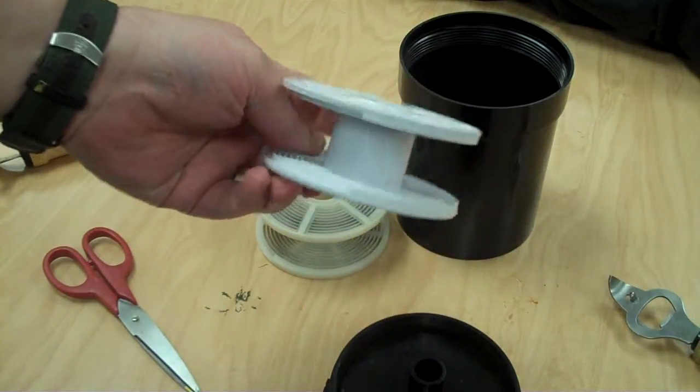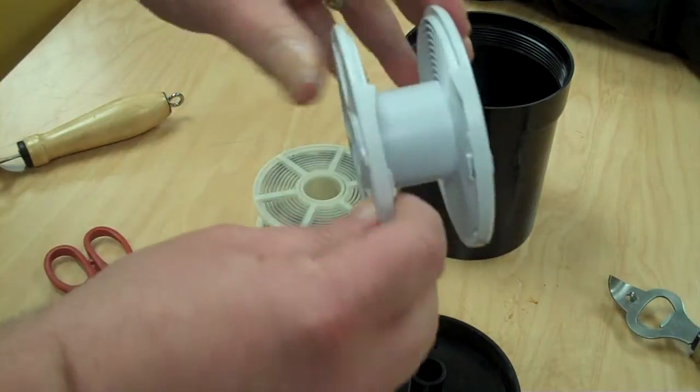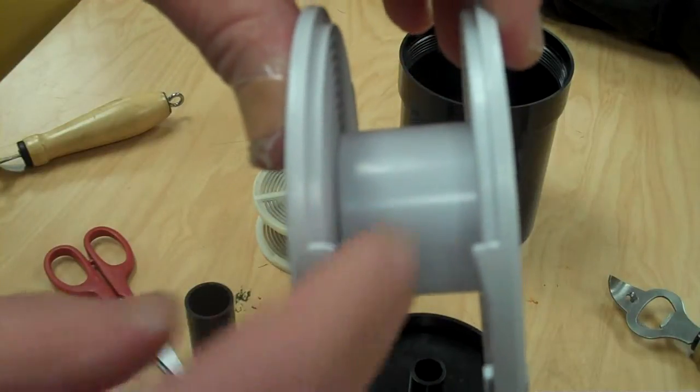This is a reel and there's two kinds. This one, and I'll hold it up to the camera, has these two little pegs.